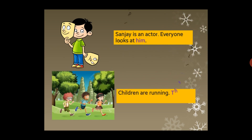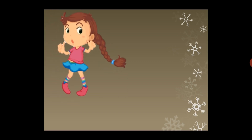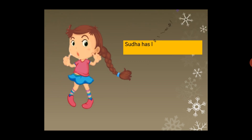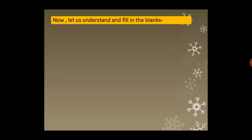Children are running — they are in a park. 'Children' means more than one, so we use 'they' for plural. Sudha has long hair — her hair is brown in color. Sudha is a girl, so we use 'her'. If it were a boy, we would use 'his'. So 'her' and 'his' make a difference in gender.